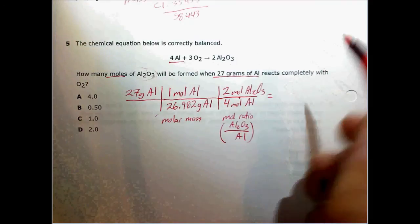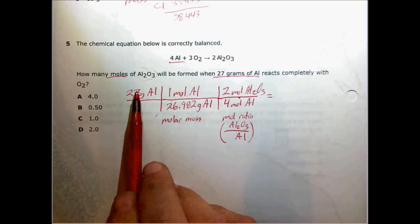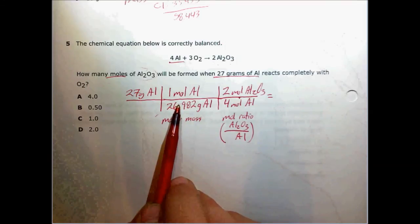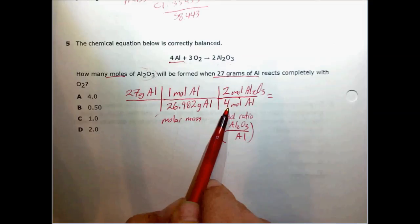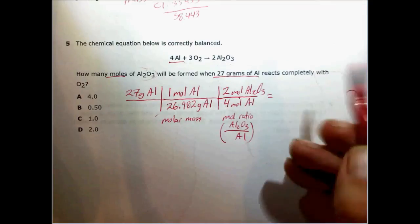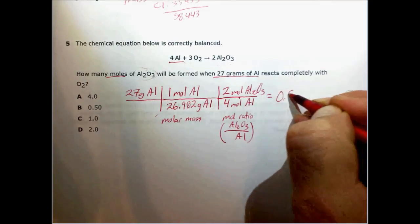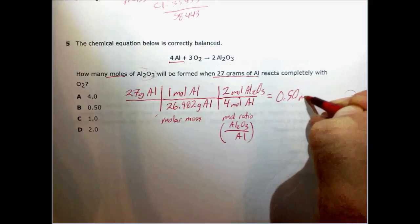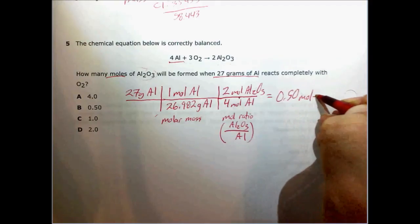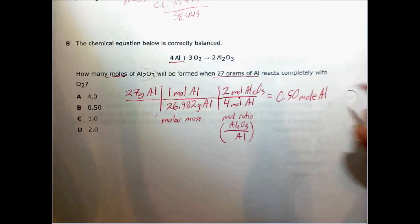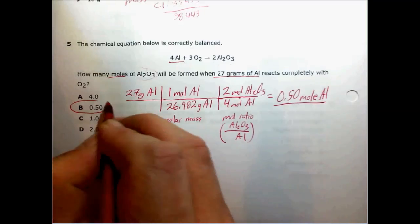If we carry this equation out, 27 divided by a very close to 27 is one times two over four. That's a half. One times a half is a half. So we get 0.50 moles of aluminum oxide. So the answer is B.